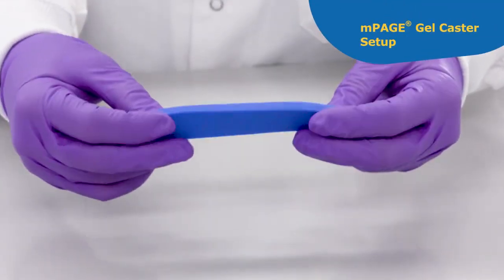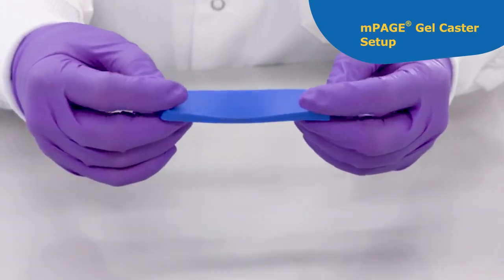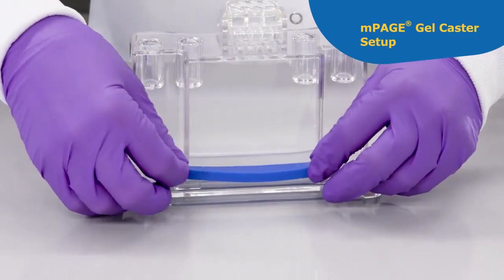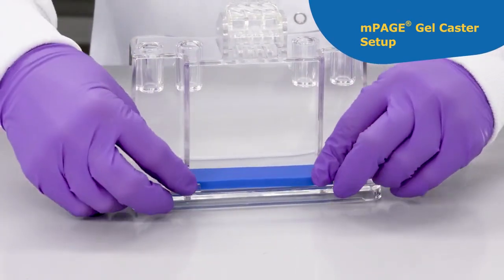Inspect the gel sealing gasket for defects. Place defect-free gasket between the alignment tabs on the bottom of the gel caster base.